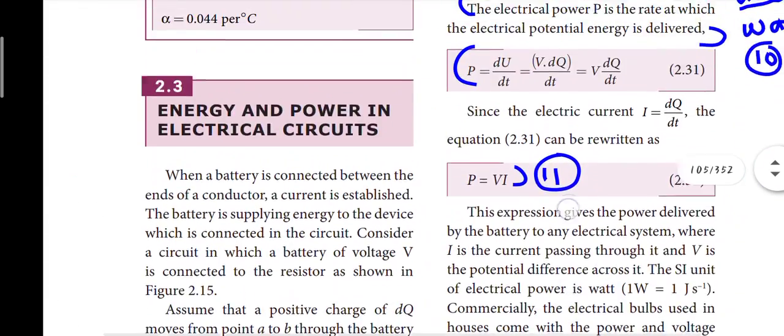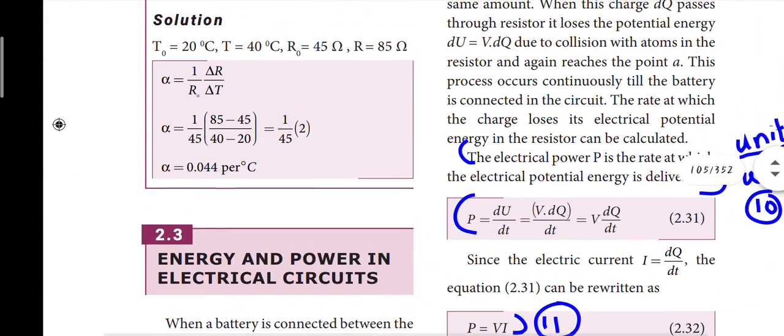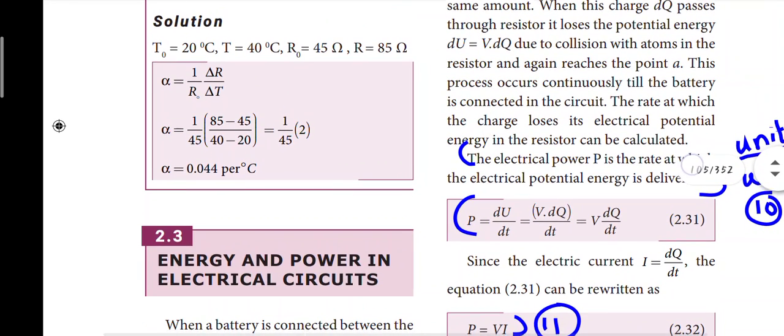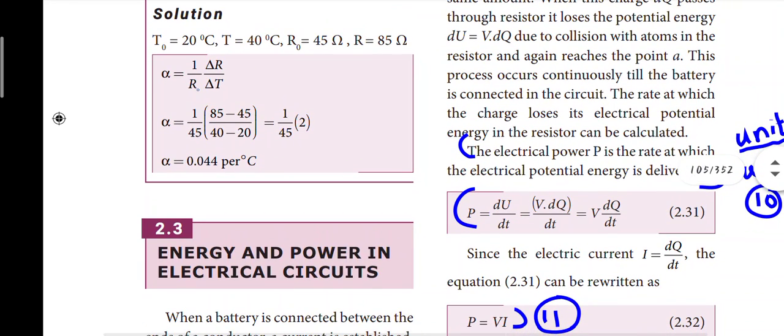Page 97: define electric power. Electric power is defined as the rate of doing work, and its unit is watt. This is the 10th question.